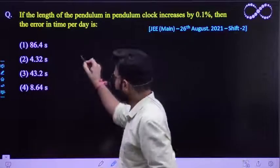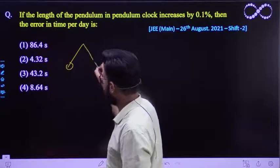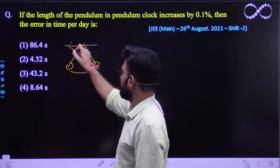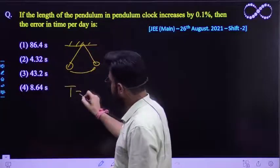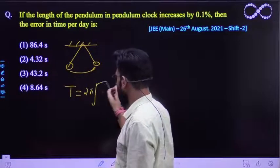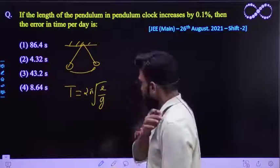We already know the time period of the pendulum is given by, if we make this pendulum, it will oscillate like this and its time period is given by 2 pi root L by G.